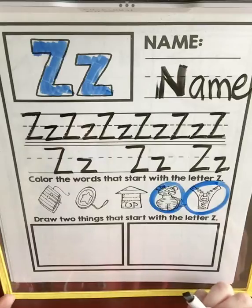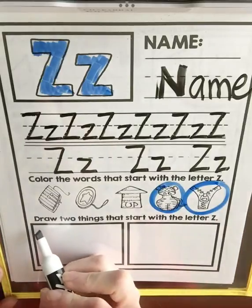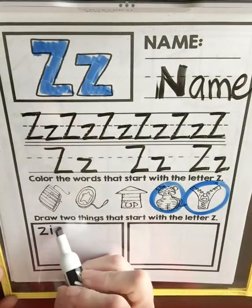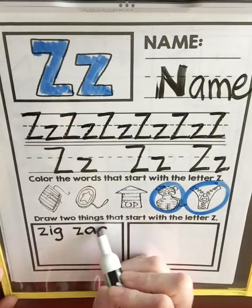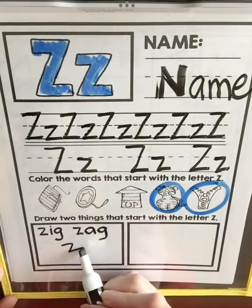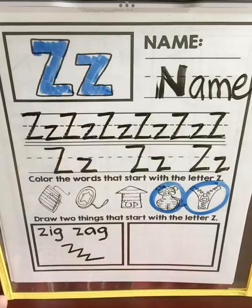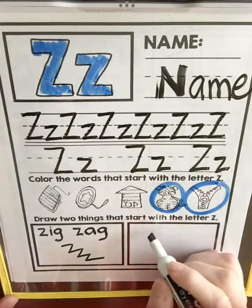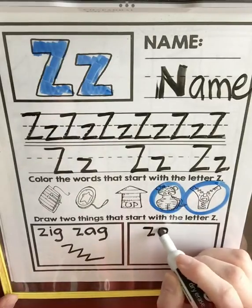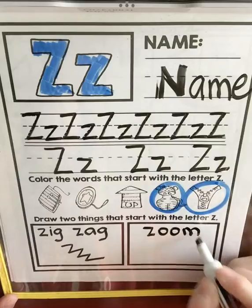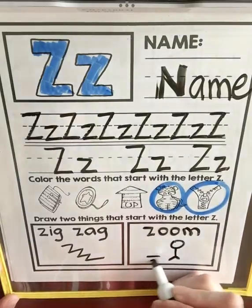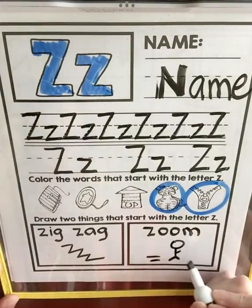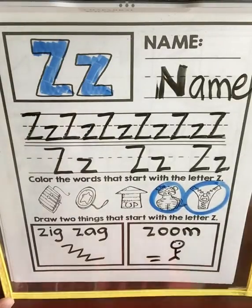Now we're going to draw two things that start with the letter Z. Zigzag starts with a Z — there are two Z's in it — and I'll draw a zigzag. And how about the word zoom? I'm going to draw someone running really, really fast. And there we go.